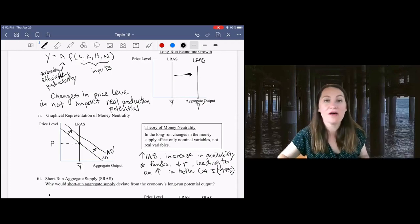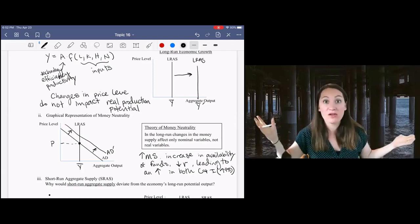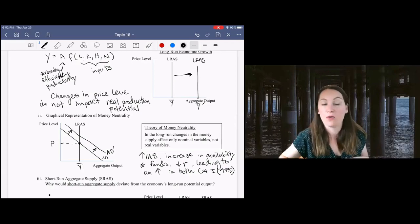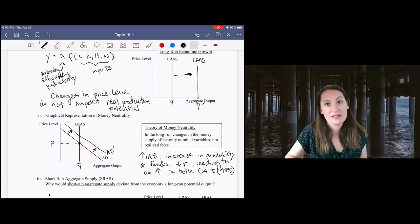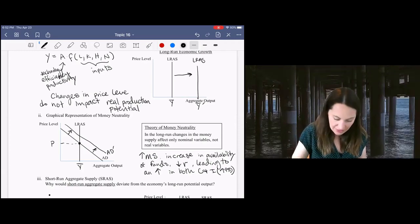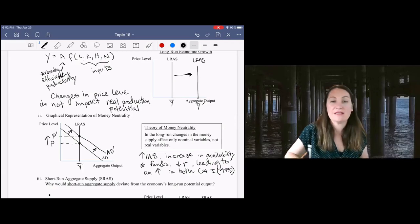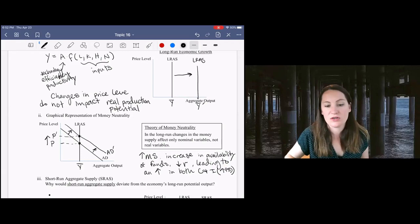But there's not more stuff to buy. We can't just all of a sudden magically produce more stuff without more workers or more capital or better technology. So the amount of stuff we can produce is fixed, and the consequence of that is that the price level will increase. There's more money chasing the same amount of goods, so prices of those goods are going to go up.